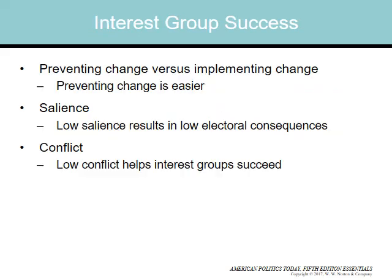Interest groups are most successful when their issues do not run against citizen preferences. Bills that are not salient mean that legislators do not have to worry about electoral reprisal — it doesn't matter much to the general population. Issues that do not have entrenched opponents are simpler to resolve. No matter what, it is easier to fight change in Washington, D.C. than to enact it.